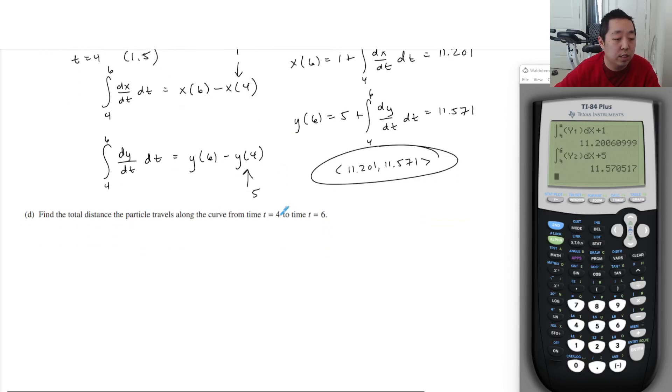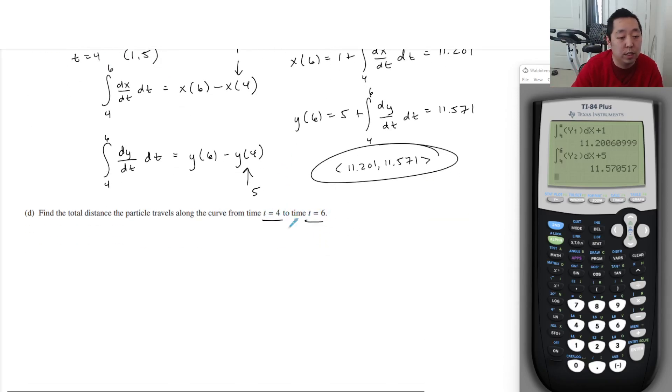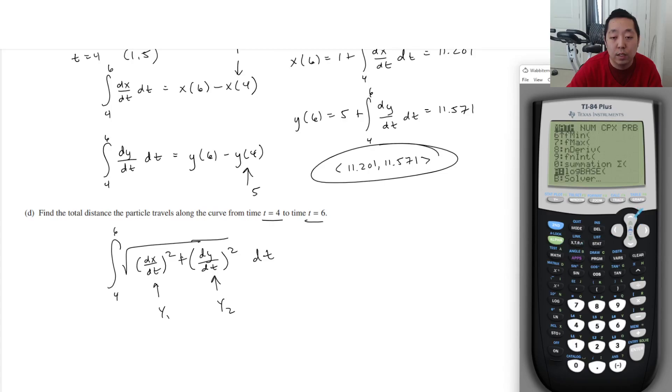Find the total distance the particle travels along the curve from 4 to 6. So total distance is always from 4 to 6 the speed. Now remember, this is my y1, this is my y2. It's not the derivative. So I've got to do an integral. I hate doing the calculator questions. There's just so much calculator typing in.